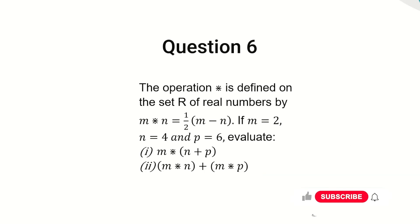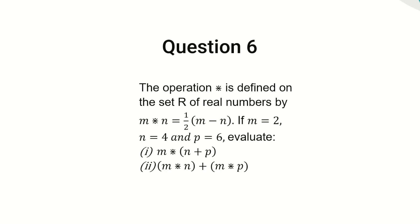The operation star is defined on the set R of real numbers by m★n = ½(m − n). Given that m = 2, n = 4, and p = 6, we have to evaluate: (i) m★(n + p), and (ii) m★n + m★p. Remember to like this video, share it, and subscribe to my YouTube channel.